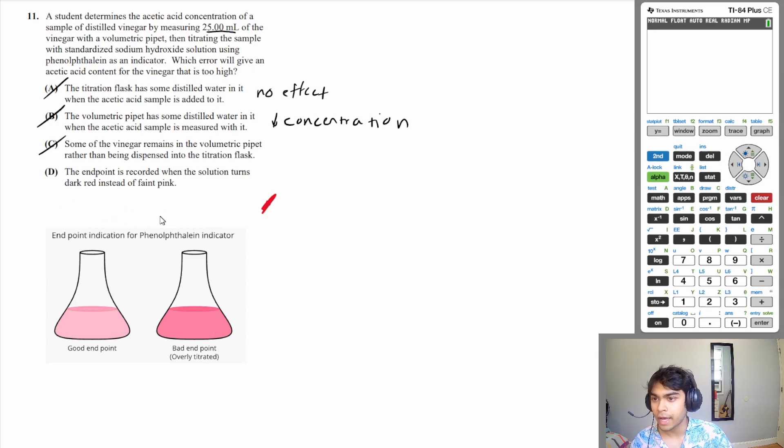And so if you do your calculations with excess sodium hydroxide, what that's going to do is that that's going to give you an acetic acid content that is higher than it should be. You're going to calculate a concentration that is greater than it should be. So D checks out. D will produce an acetic acid content that is too high.